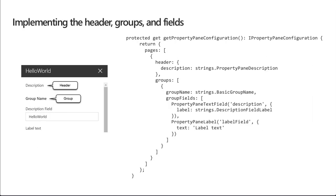To implement the header, group, and fields, inside a web part there is a method called getPropertyPaneConfiguration. That's going to return back an object of type IPropertyPaneConfiguration. This has a single property of pages that has an array of multiple pages, and then each page can have a header and groups section. Within the header we can have a description property.